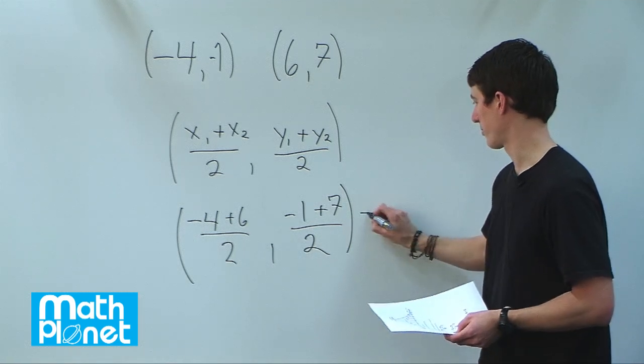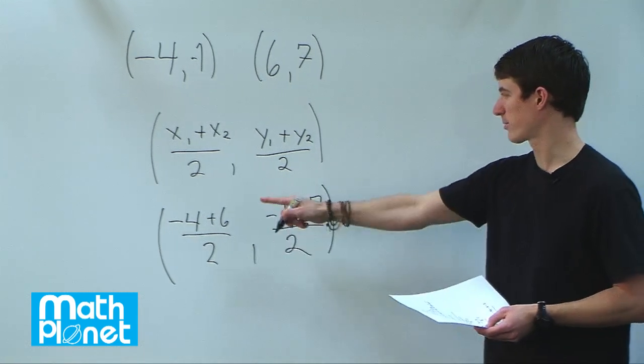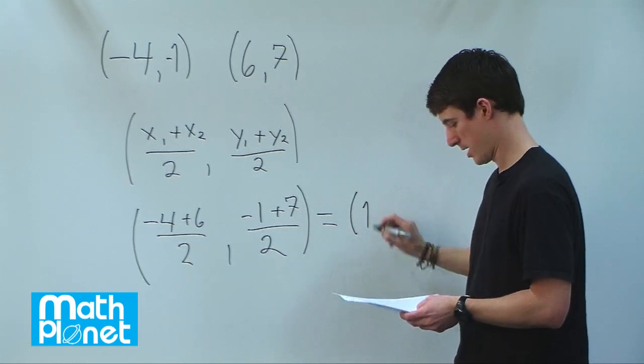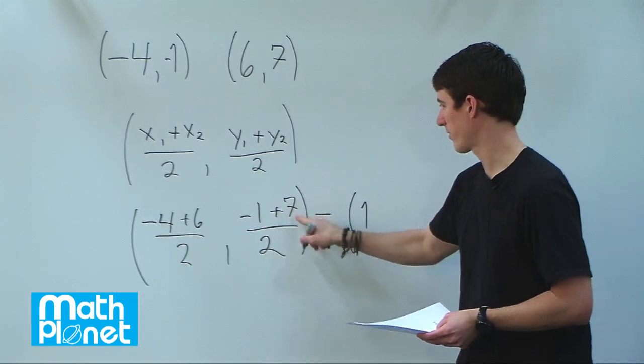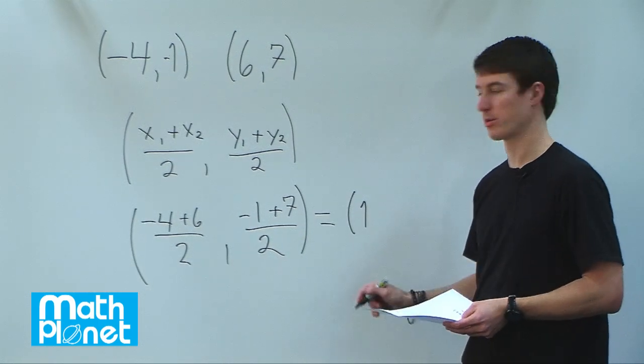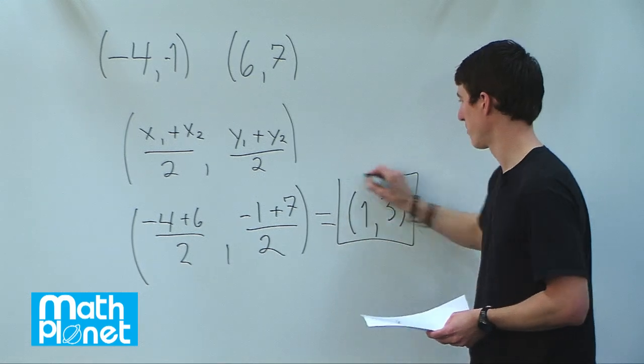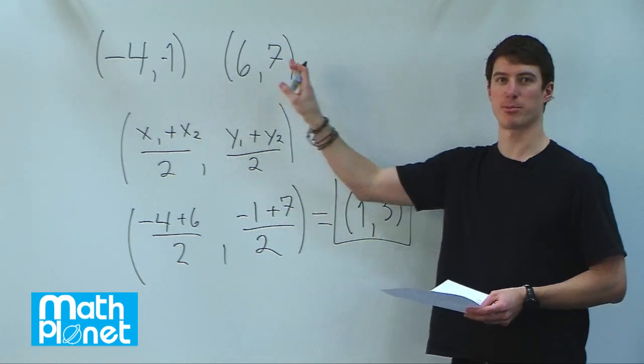And that just gives us the point. We have 6 minus 4 is 2, 2 divided by 2 is 1. And then we have 7 minus 1, which is 6, 6 over 2 is 3, so 1, 3. So here is our midpoint between these two points.